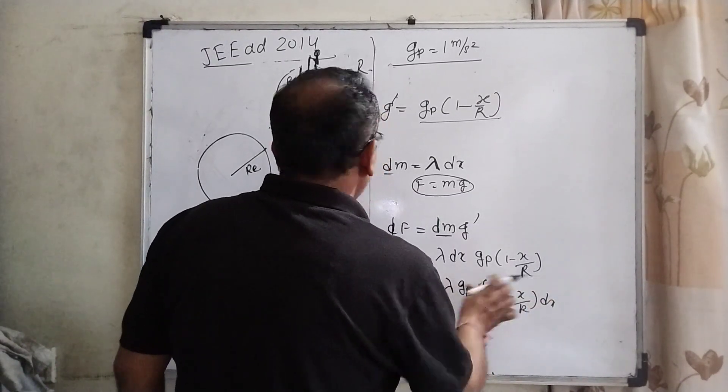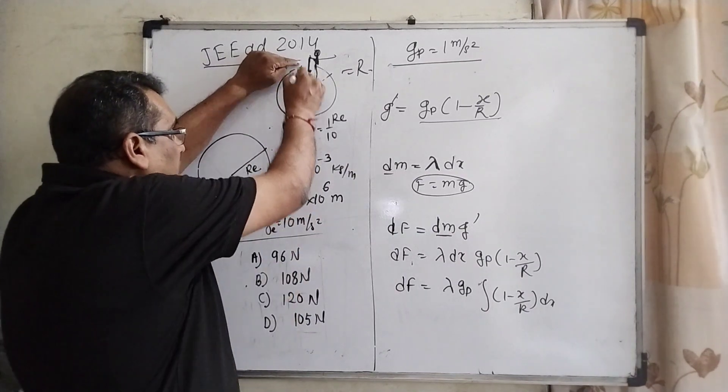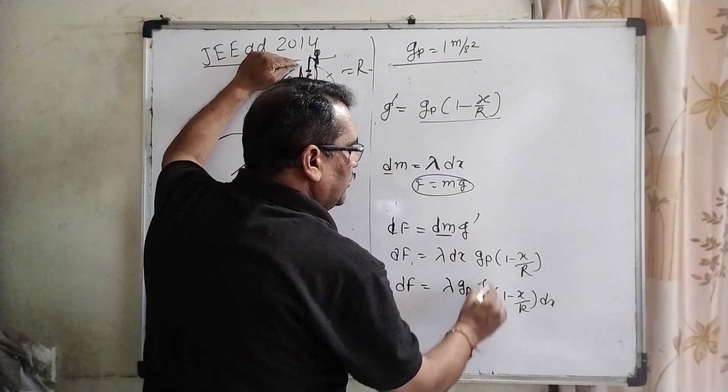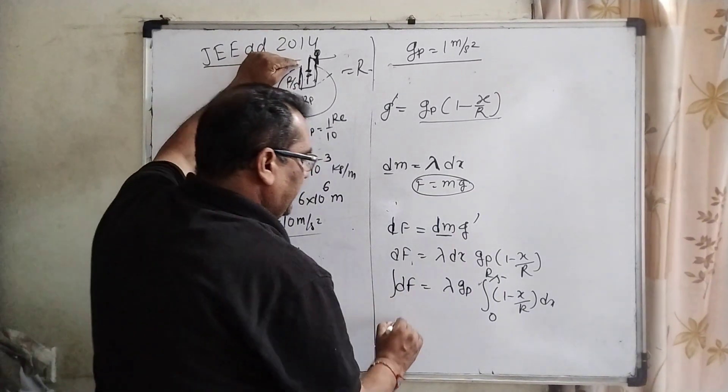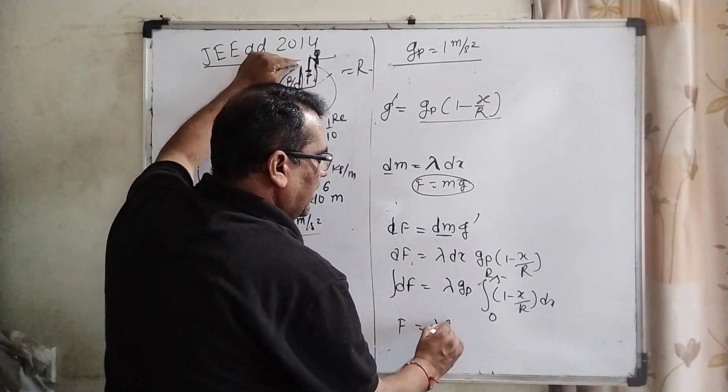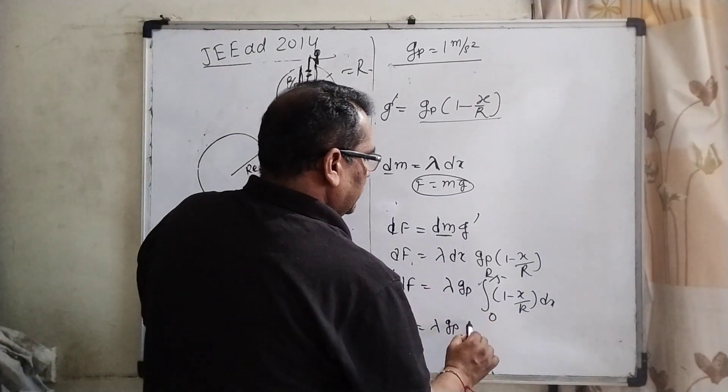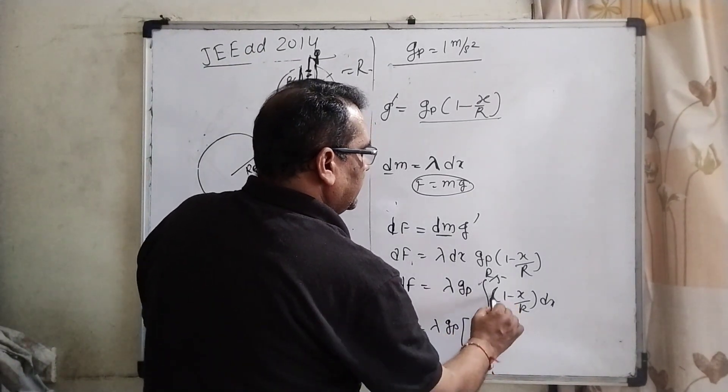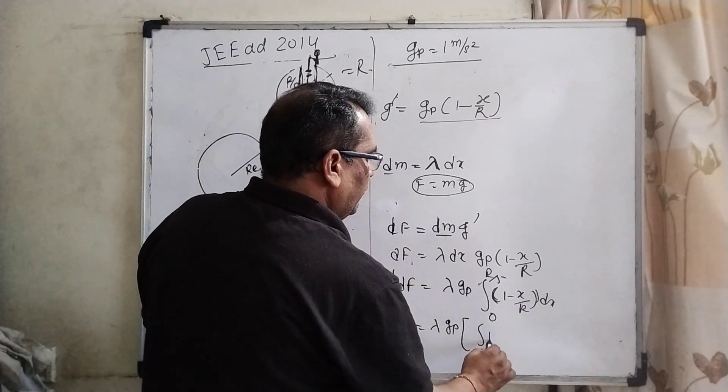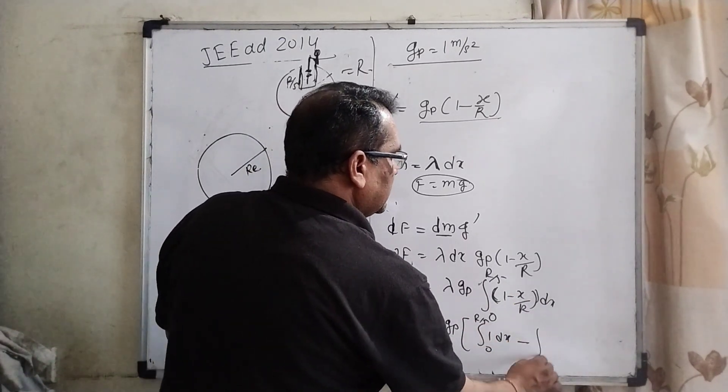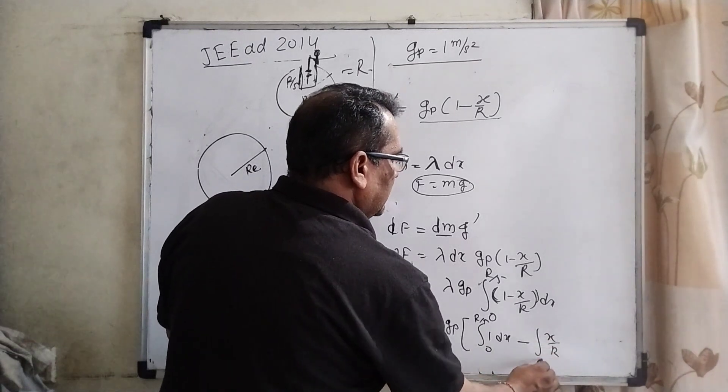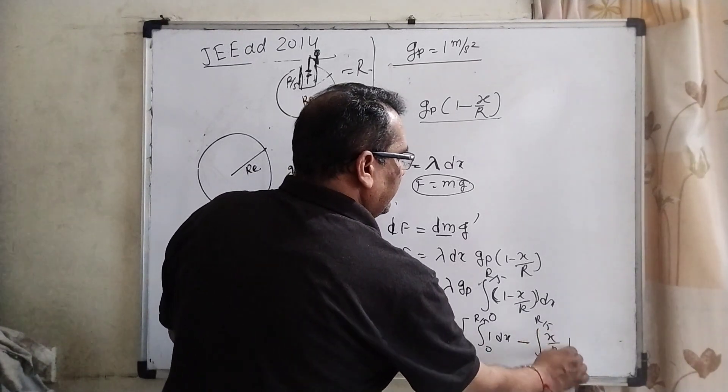Then integrating, f equal to lambda gP integral of dx and what is the limit? You know that at R by 5, 0 to R by 5. Now, f equal to lambda gP and separate by doing separate here, 1 dx, 0 to R by 5, minus x by R, 0 to R by 5 dx.